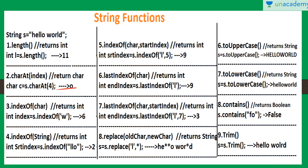Now if we know some character and we want to get its index, we can use the indexOf() function. It returns an int because the index is in int form. For example, to find the index of 'w': the index of O is 4, index 5 is for space, and index 6 is for W. So it will print 6 on screen.